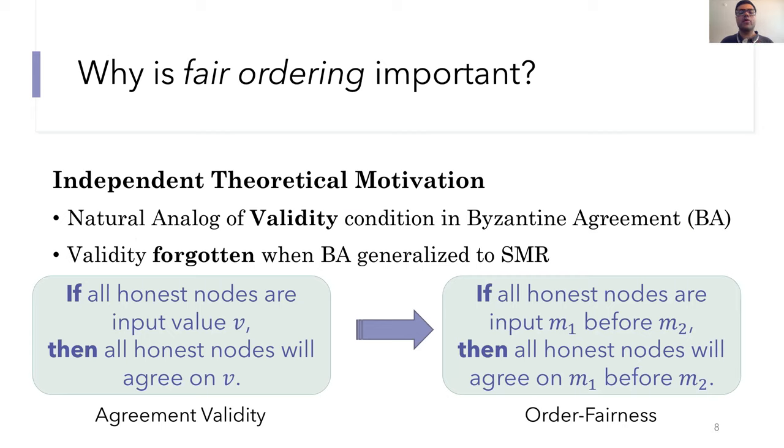But we think that there's a strong theoretical motivation as well. And for cryptographers, I think that's equally important. So order fairness, as it turns out, is a natural analog of the validity condition in the closely related Byzantine agreement problem. So in the BA problem, all nodes are input some value in a value set, and the goal is for them to agree on the same output value.